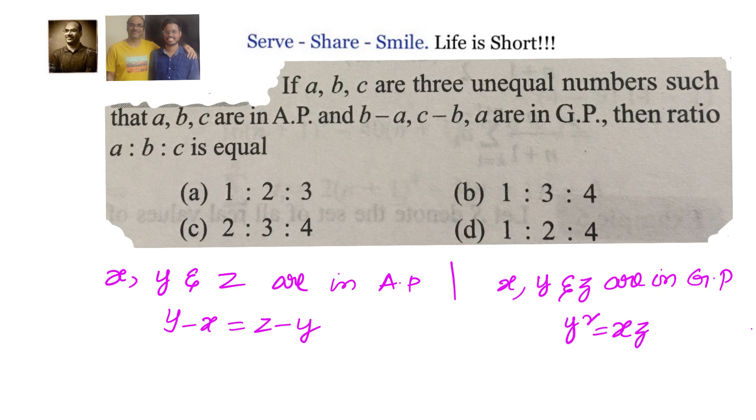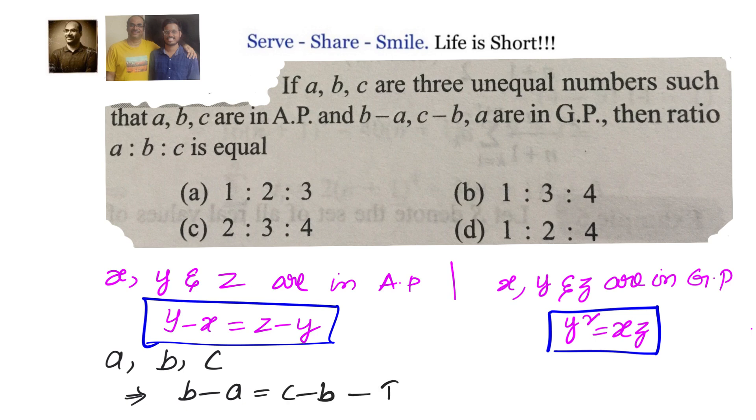Now let us apply this to our given numbers. In place of X, Y, Z, we have A, B, C for AP. So let us write down A, B, C are in AP. Therefore, B minus A equals C minus B. This is our first equation, the first condition we got.